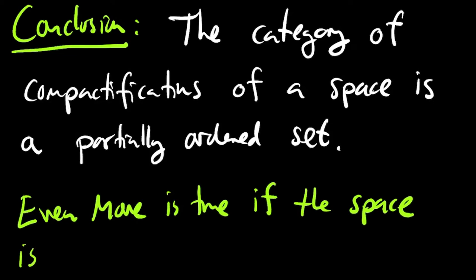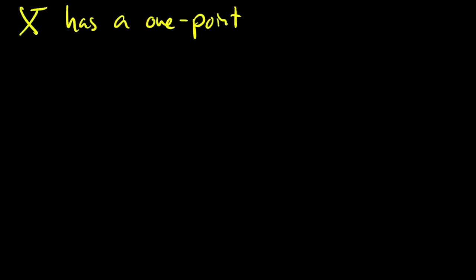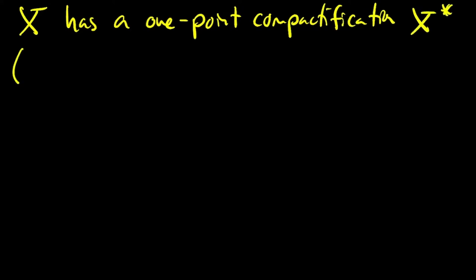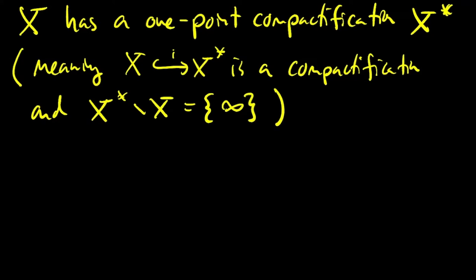And if that space is nice — say locally compact and Hausdorff — then even more is true. To see how locally compact and Hausdorff come into it, let me explain what kind of spaces have one-point compactifications. A one-point compactification of X, call it X*, is a compactification where X* minus the image of X is just one point, which I'll call infinity.